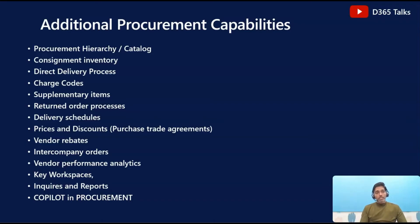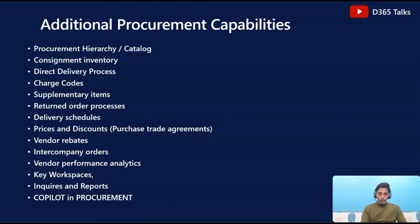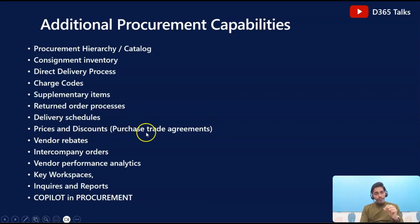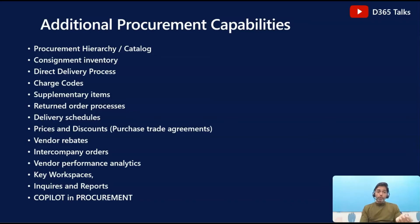We will try to understand about supplementary items — especially how to add and configure items at the item master level and how they can be used, for example, if you have a free-of-cost material and how it can be added to your purchase order. We will also understand the return order processes, which are completely different from traditional purchase order processes and have separate methods which can be followed. We will also understand delivery schedules, price and discounts — primarily touching on purchase trade agreements — and see how prices and product dimensions captured in the trade agreement get cascaded to the purchase order confirmed against a specific vendor.